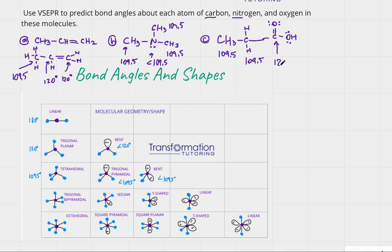Finally, this oxygen is connected to a carbon and a hydrogen, and it has two lone pairs. When an atom is connected to two atoms and has two lone pairs, the shape is bent and the bond angle is slightly less than 109.5°.